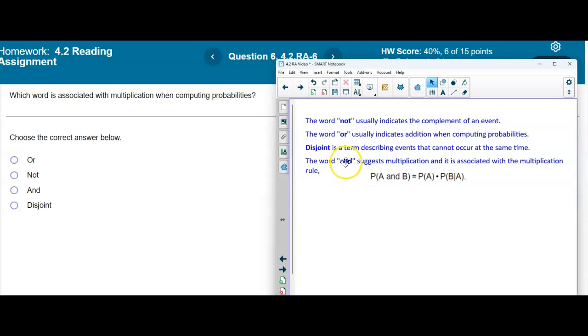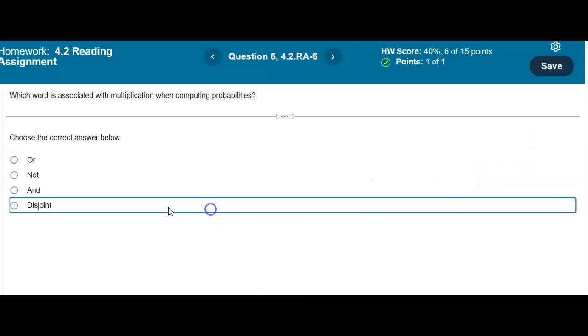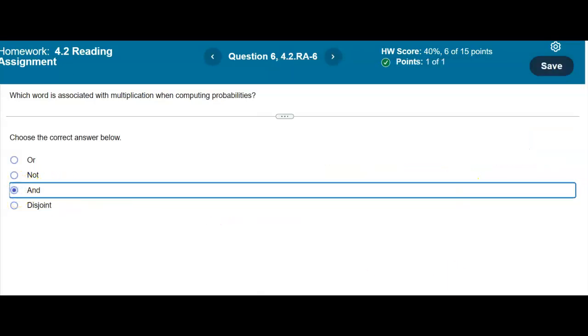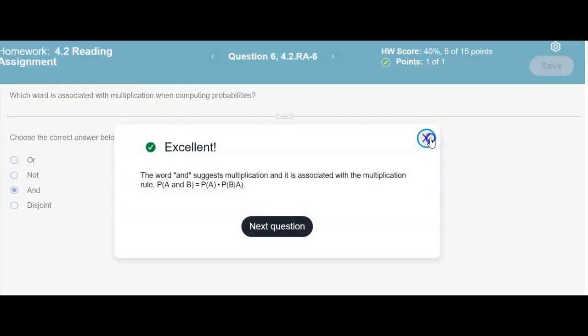The word and suggests multiplication and it is associated with the multiplication rule. The multiplication rule states the probability of A and B is equal to the probability of event A times the probability of event B provided that A has already occurred. So the answer is going to be the word and and that is our result.